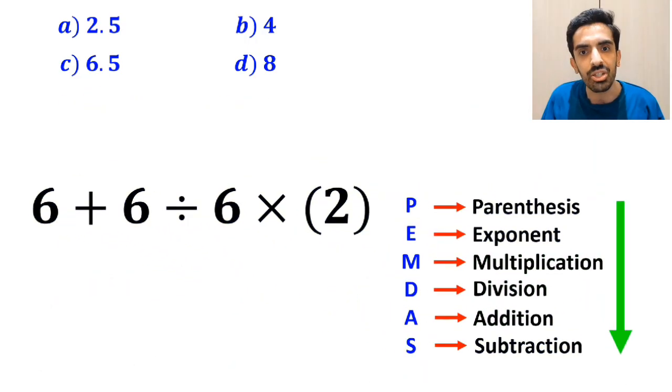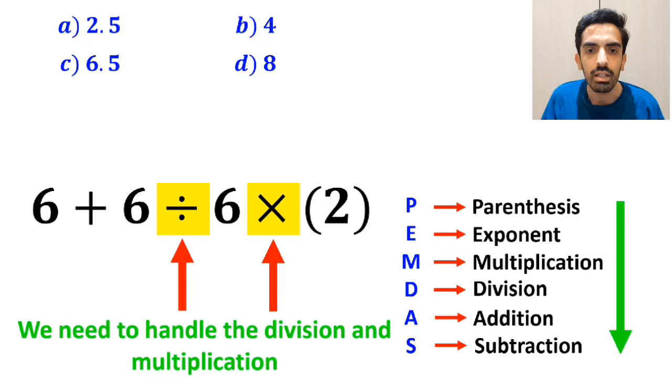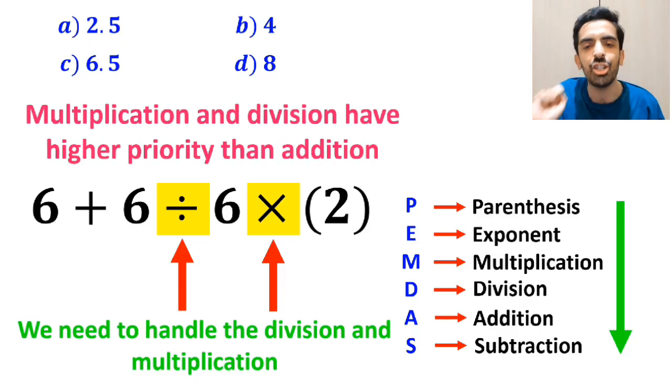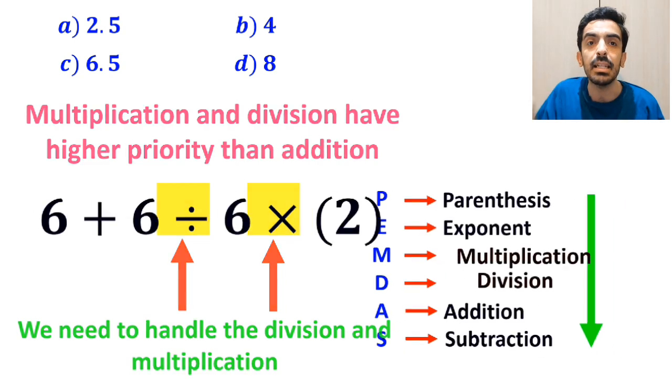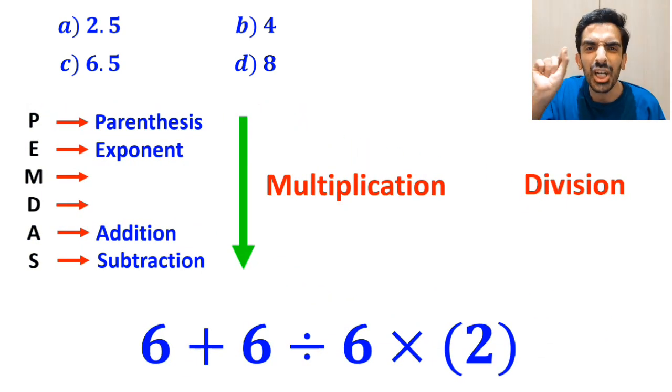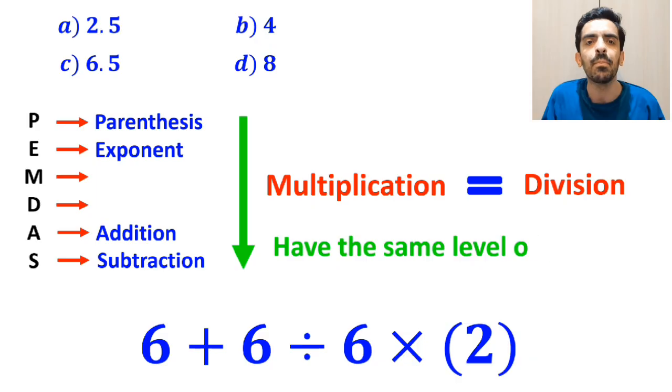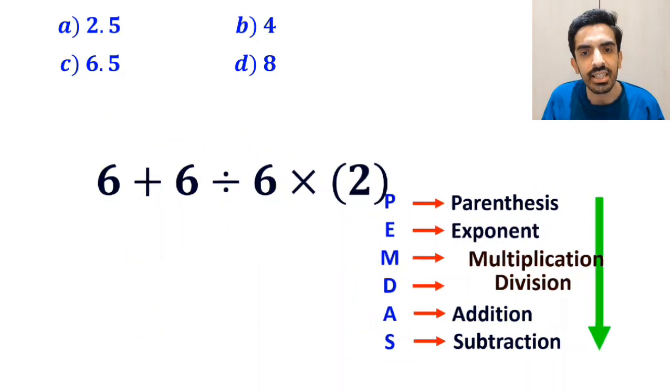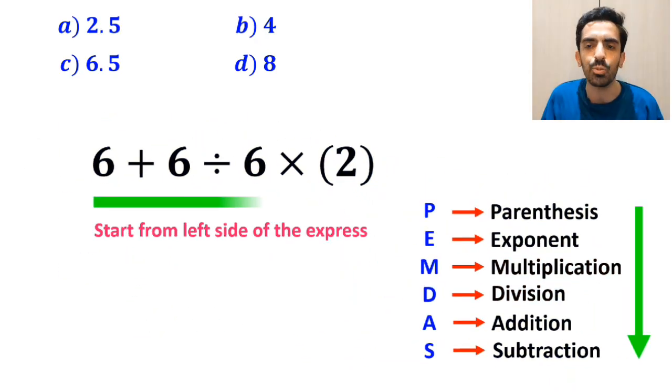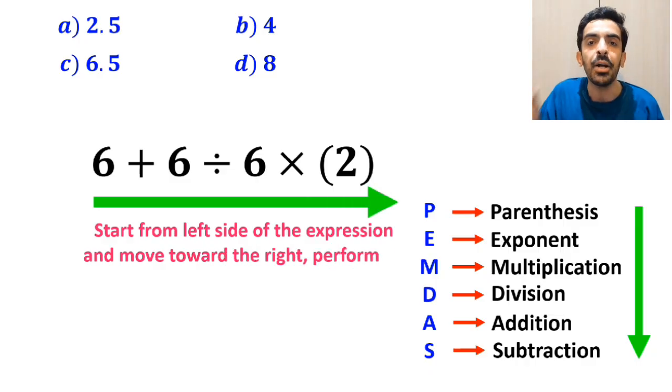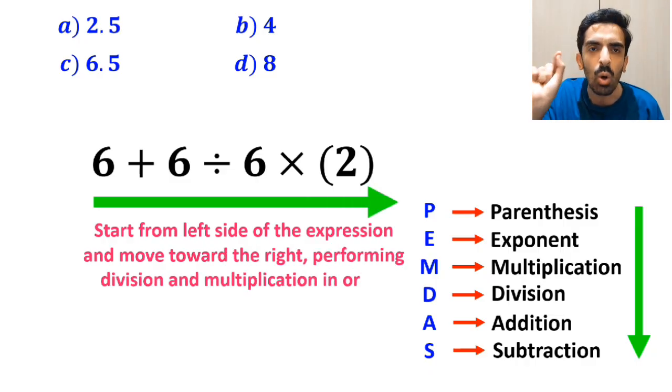In the next step, we need to handle the division and multiplication because multiplication and division have a higher priority than addition. However, it's very important to note that in the PEMDAS rule, multiplication and division have the same level of priority. In this case, the best thing to do is to start from the left side of the expression and move toward the right, performing division and multiplication in order.